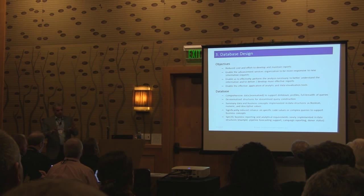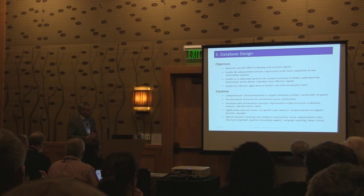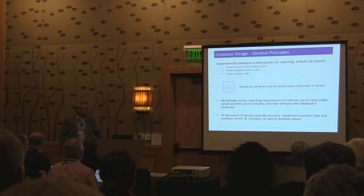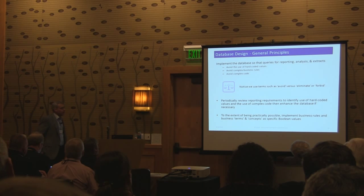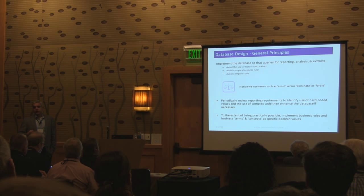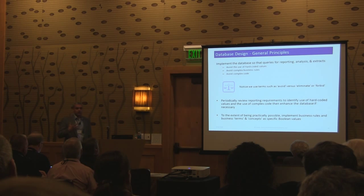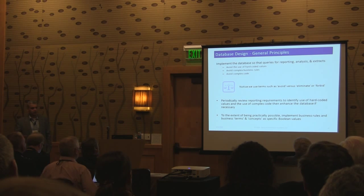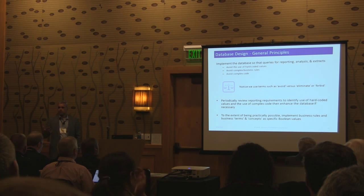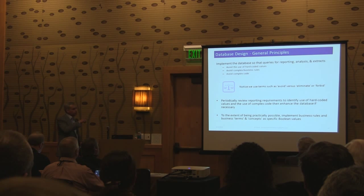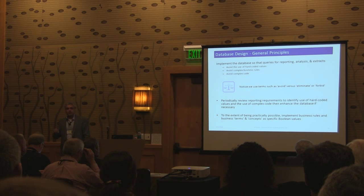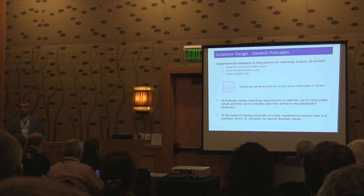We wanted really good long and short-term flexibility in our choice of tools — those are the objectives as we design the database, going beyond selection of relational versus other, into our implementation. What we have are both normalized and denormalized structures, with business concepts implemented in the data. In terms of general principles in both reporting and database design, there are a couple of high-level principles that pretty much accomplish most of what we're trying to do. We want to avoid the use of hard-coded values. We want to avoid having to have complex business rules known, understood, and implemented in reports and SQL queries. We want to avoid complex SQL code to perform tasks.